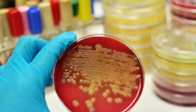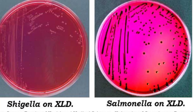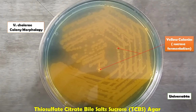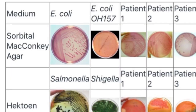You can actually do culture and sensitivity on stool samples. The culturing media of choice include MacConkey agar, which inhibits gram-positive organisms and differentiates between lactose fermenters and non-lactose fermenters — making it a differential medium. We can use Xylose Lysine Deoxycholate (XLD) agar, which is a selective medium recommended for isolation of Salmonella and particularly Shigella from fecal samples. We can also use Thiosulfate Citrate Bile Salt Sucrose (TCBS) agar, which is an excellent medium for primary isolation of Vibrio cholerae.